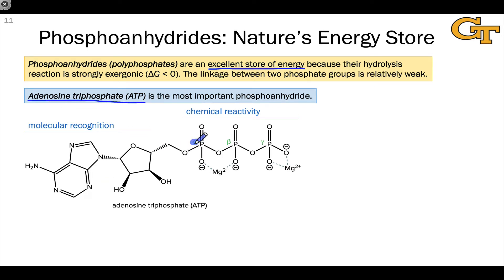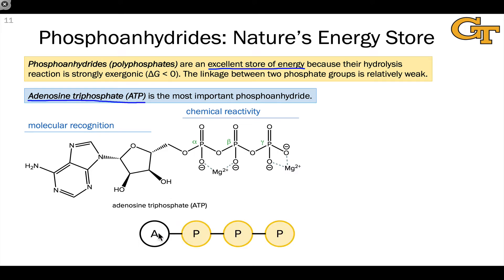The first is called the alpha phosphoryl group, the second is the beta, and the third is the gamma phosphoryl group. Because the adenosine portion is really just for molecular recognition, it's often represented just as A with a circle. We typically represent each of the phosphate groups individually using P with a circle around it, often shown in yellow just to indicate energy content.